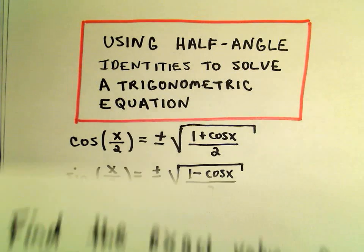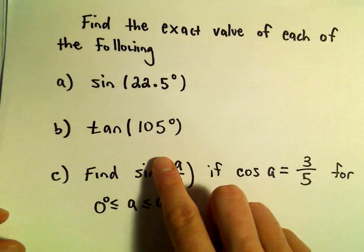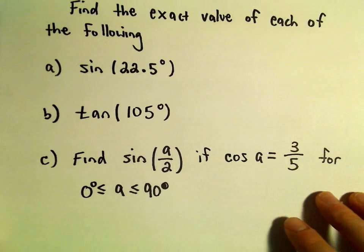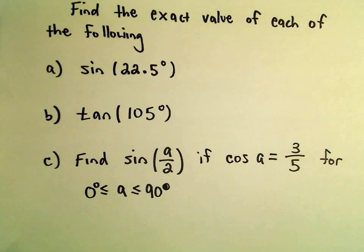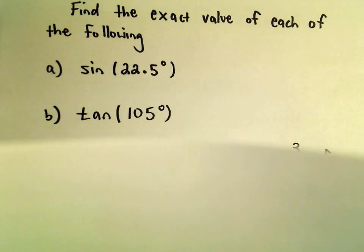For example, suppose we want to figure out sine of 22.5 degrees. All I'm going to do is simply rewrite sine of 22.5.